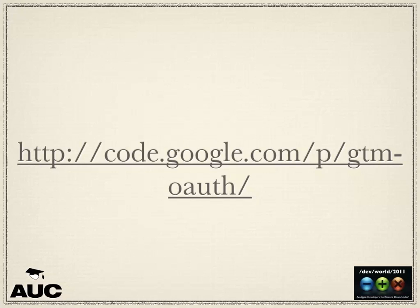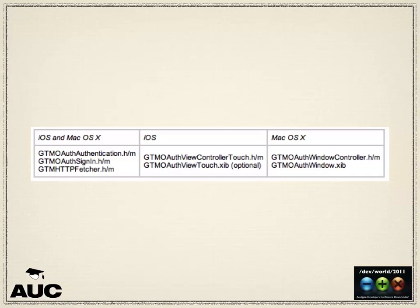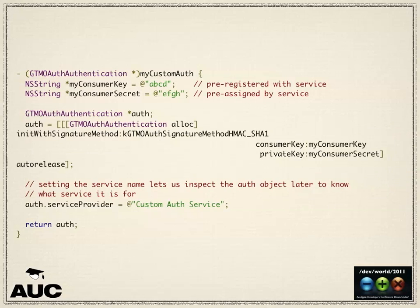That's where you can get it from. There's also a version for OAuth 2 if you're using an OAuth 2 service. It contains a few different files you have to put in — whether you're on iOS or Mac, just pop in those files. Each one serves a different purpose.